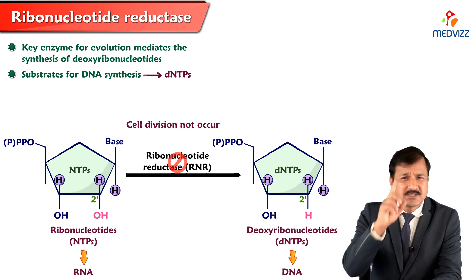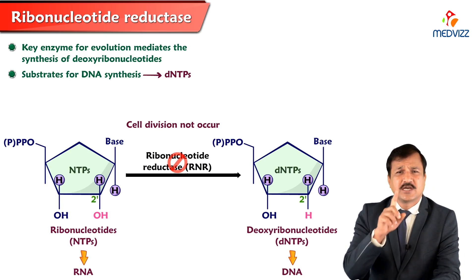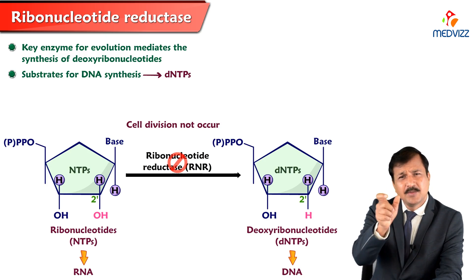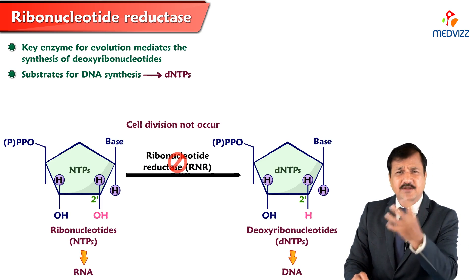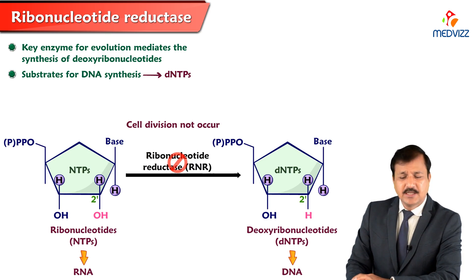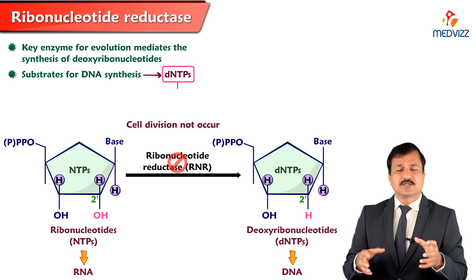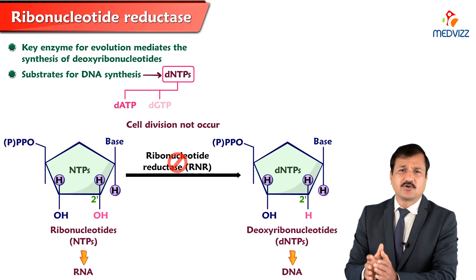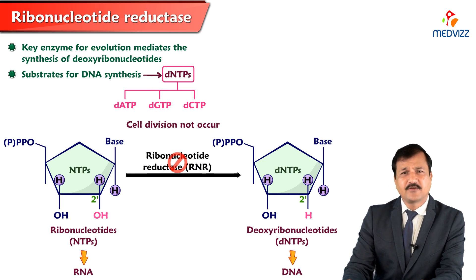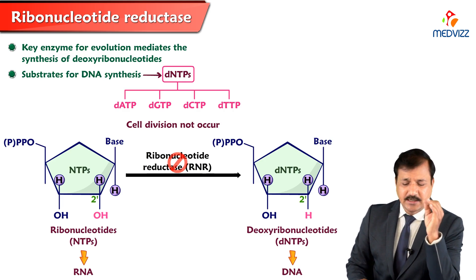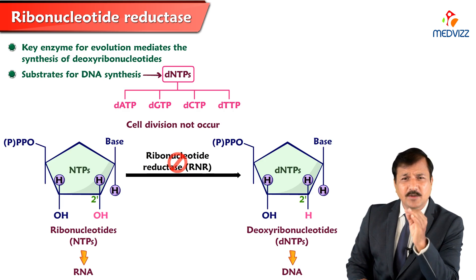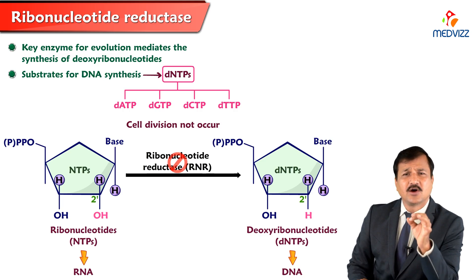Ribonucleotide reductase is the only enzyme in our cell with the ability to convert ribose into deoxyribose so that DNA material — the substrate for DNA synthesis — is made possible. The substrates for DNA synthesis are the four deoxyribonucleotide triphosphates, and all of them must come from ribonucleotide reductase, which also ensures balanced synthesis of all deoxyribonucleotide triphosphates.